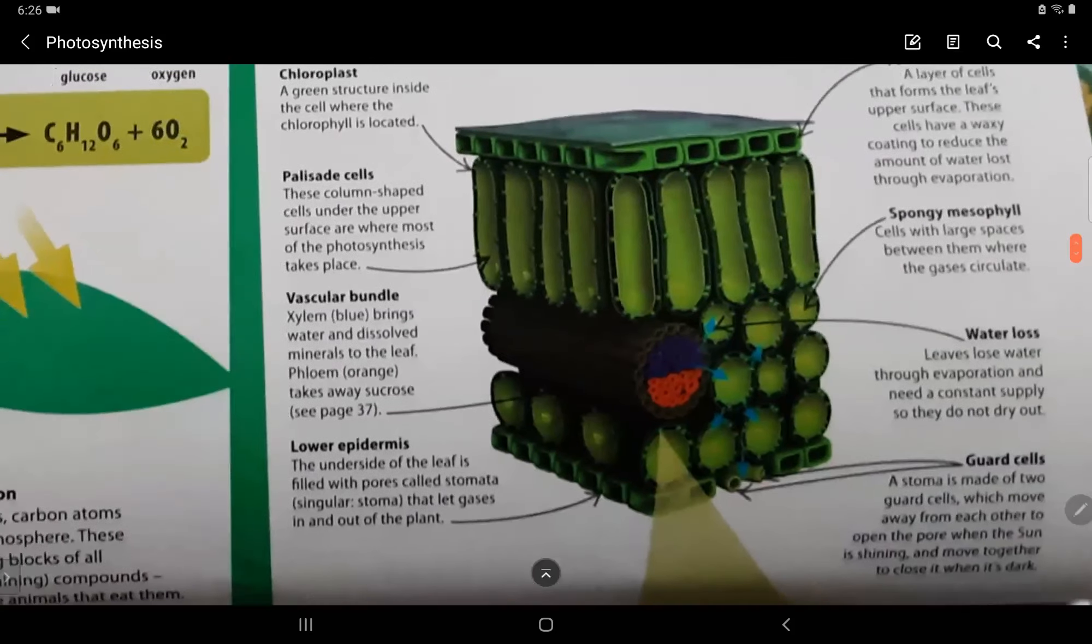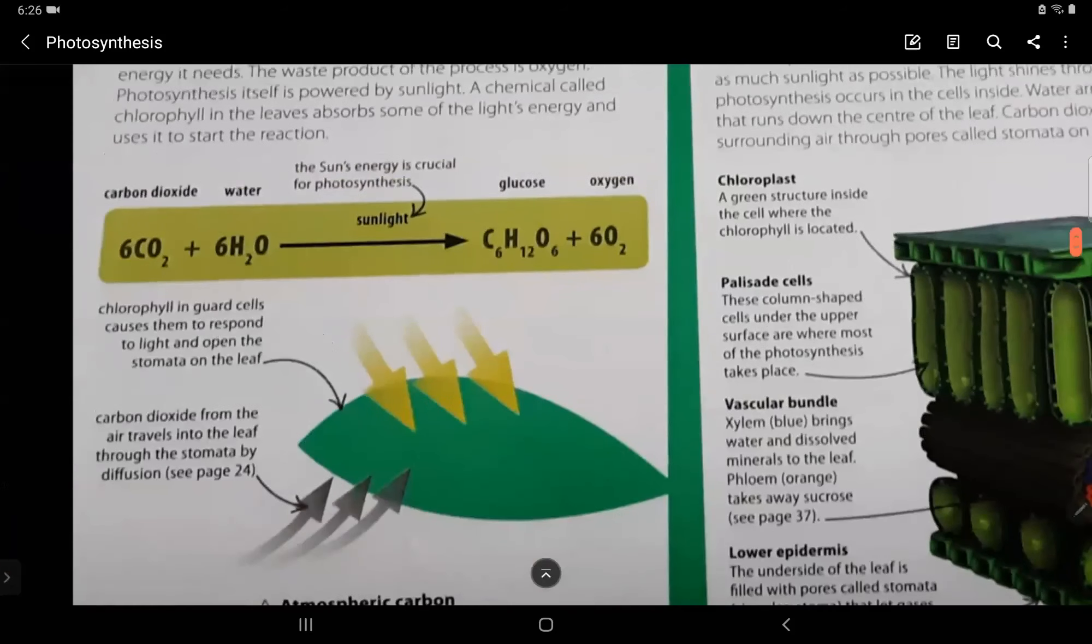Now let's read the equation of photosynthesis. 6CO2 plus 6H2O and then the arrow which is the sunlight which will be the light energy is crucial for photosynthesis. C6H12O6 plus 6O2. So if we write it in words, it will be carbon dioxide plus water, then the light which represents sunlight, glucose plus oxygen.